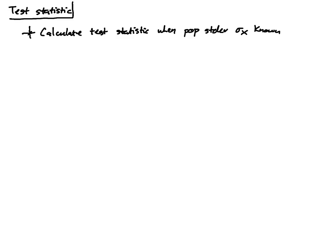Now when the population standard deviation is known, we calculate the test statistic which we denote z by taking the sample mean x-bar minus the hypothesized value mu sub zero divided by the population standard deviation sigma x over the square root of the sample size.